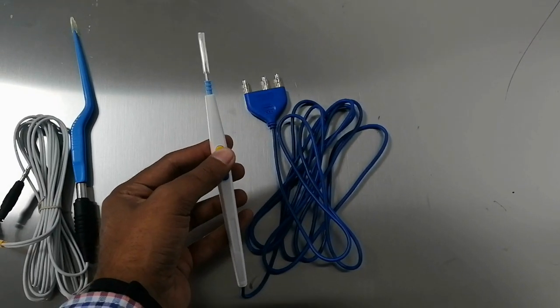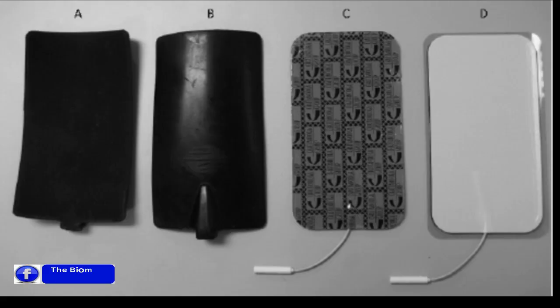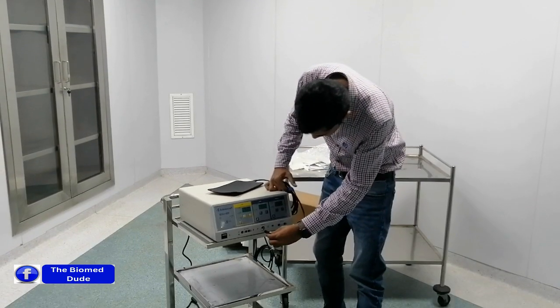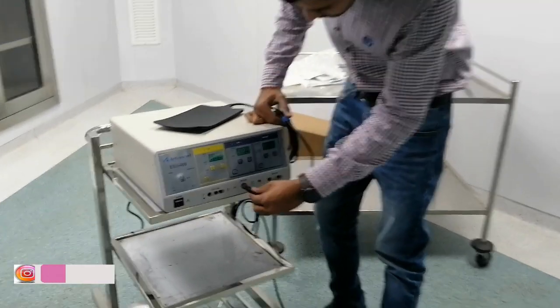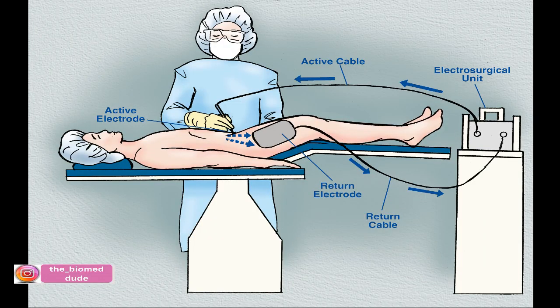Patient return electrode. This is a large adhesive pad placed on the patient's skin, usually on the thigh or back. It completes the electrical circuit and allows the energy to flow back to the generator. The return electrode must be properly placed to avoid electrical burns or shock to the patient.